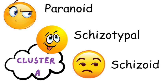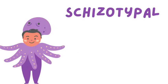Now let's focus on the two personality disorders with the prefix schizo. These two disorders often get confused, so let's take a closer look. I remember schizotypal personality disorder with the phrase 'odd type.' Also, the word schizotypal has the word 'type' in it — schizotypal.